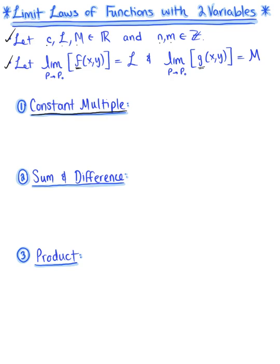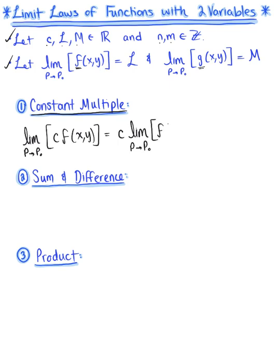Our first rule is the constant multiple rule. If you have the limit as p approaches p₀ of a function f with a scalar multiple c, then just like in single variable calculus, we can pull the constant c to the outside of the limit. This equals c multiplied by L, the limit of f.